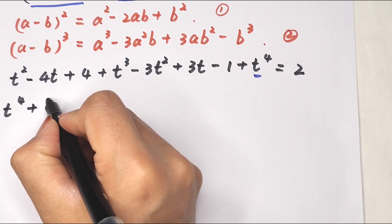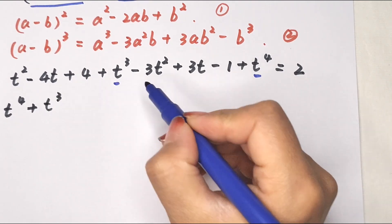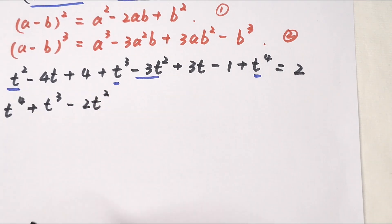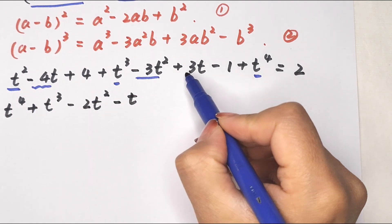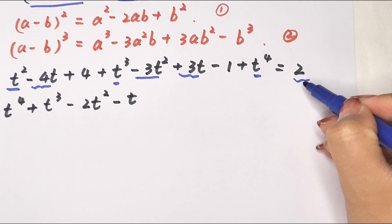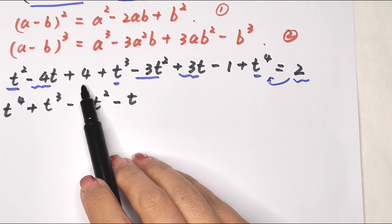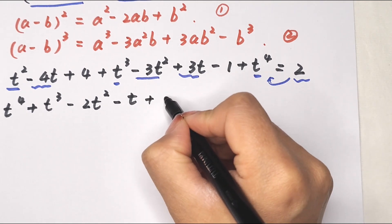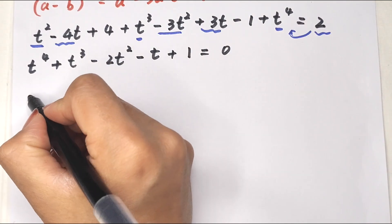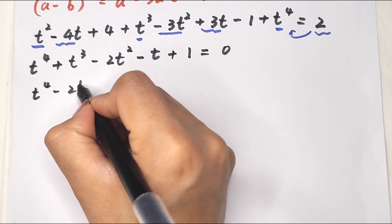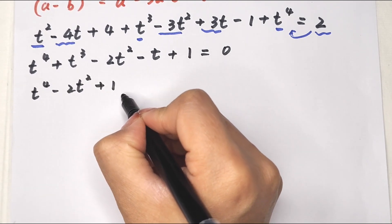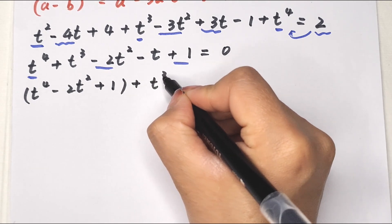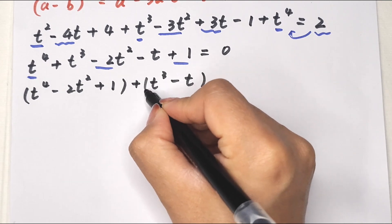Combining all terms: t to the power of 4 plus t cubed minus 2t squared minus t plus 3 minus 2, bringing the 2 from the right side to the left. So we get t to the power of 4 plus t cubed minus 2t squared minus t plus 1 equals 0.